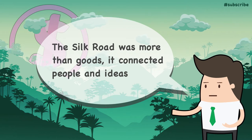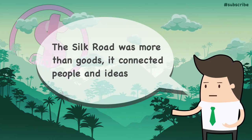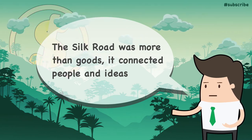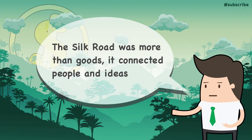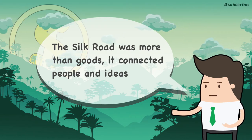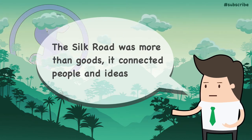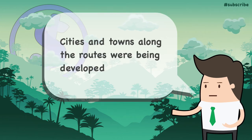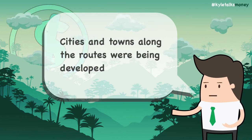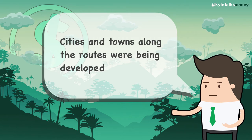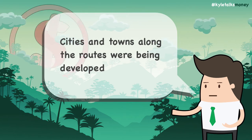In addition to silk, a wide range of other goods was traded along the Silk Road, and the network was also important for migrants and travelers and for the spread of religion, philosophy, science, technology, and artistic ideals. The Silk Road had a significant impact on the lands through which the routes passed, and trade played a significant role in the development of towns and cities along the Silk Road routes.